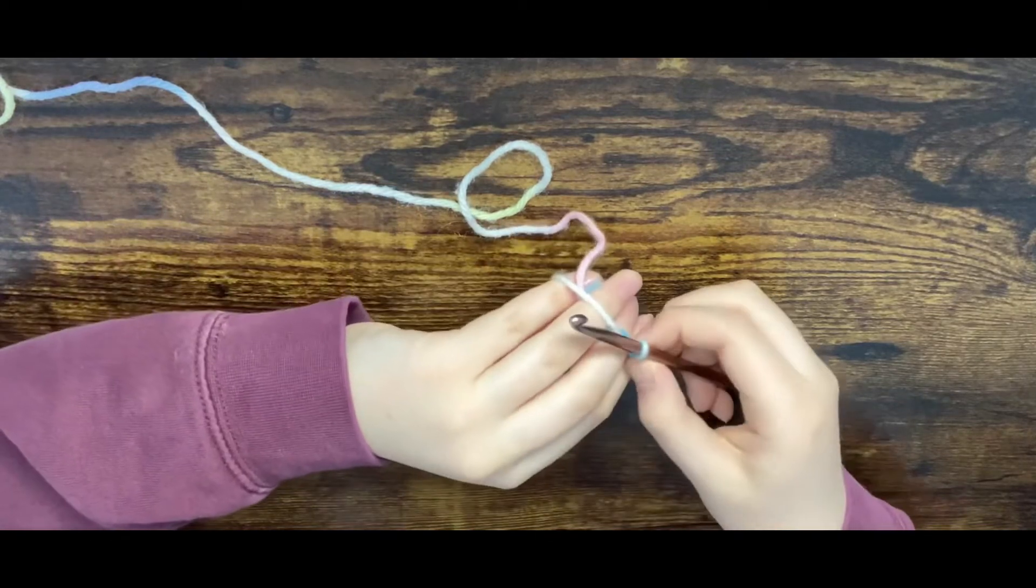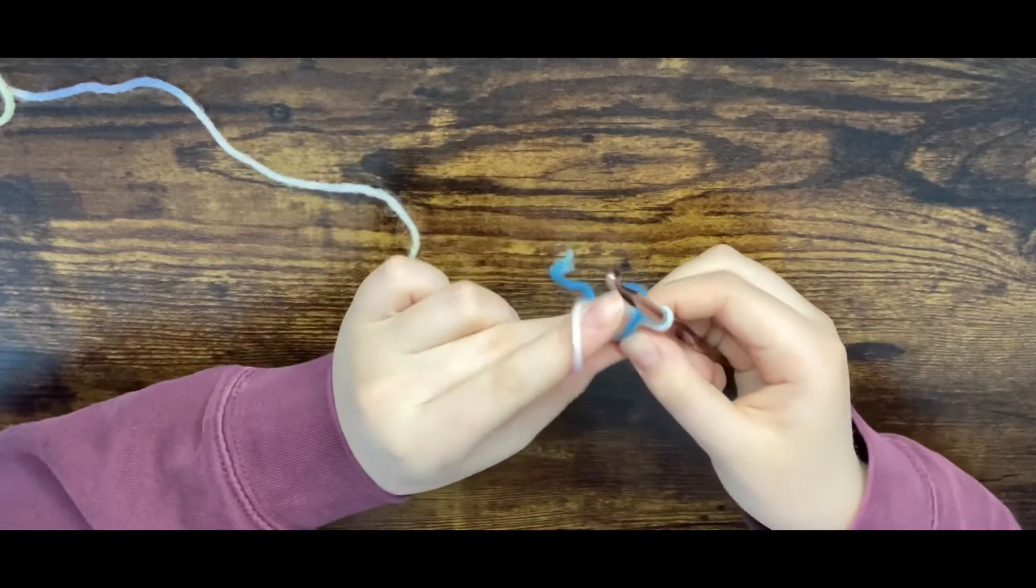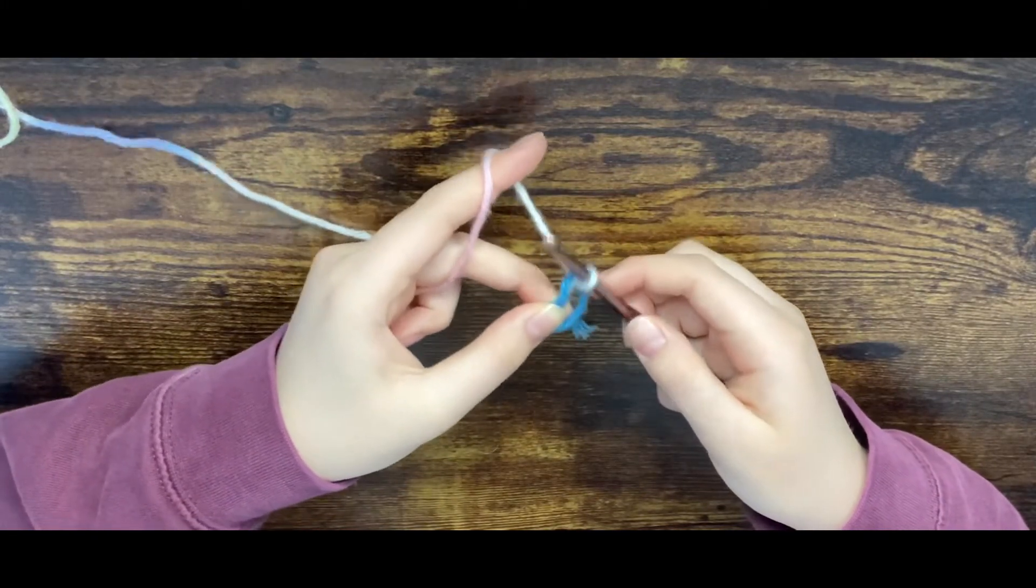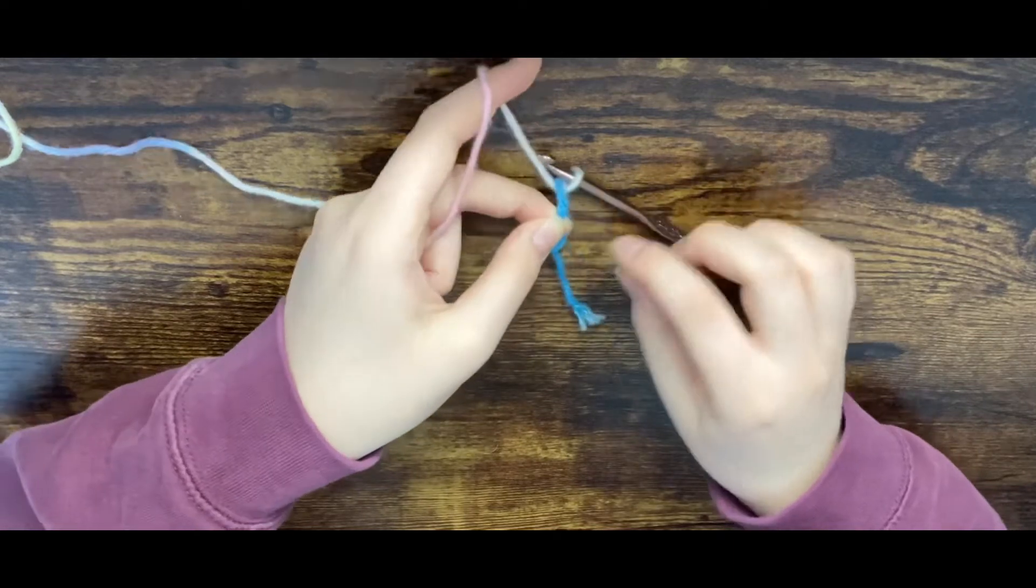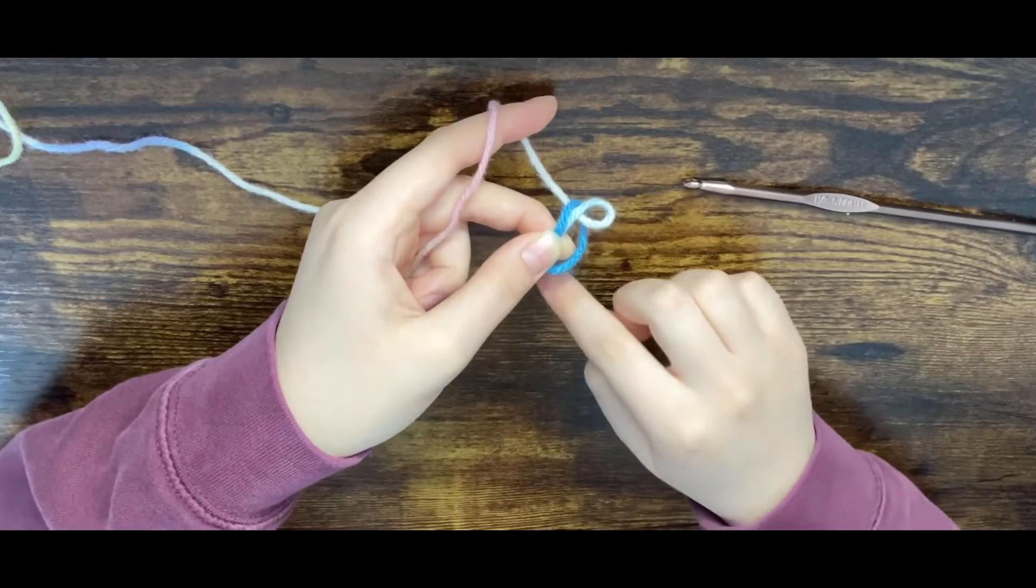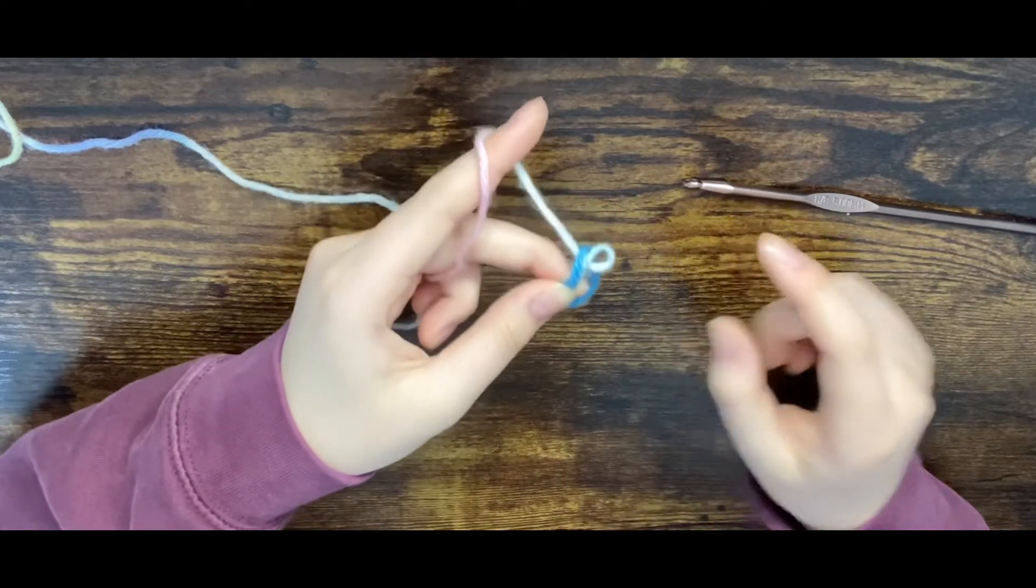Then you can take it off your fingers but you just want to hold it very gently so it doesn't fall apart. This is kind of tricky but you'll eventually get it. You want to hold the loop and the strand with your middle finger and your thumb and then hold it like usual.